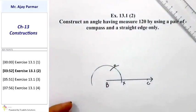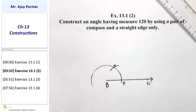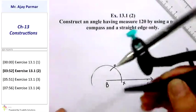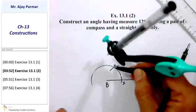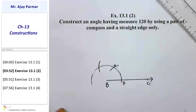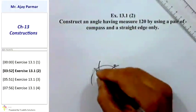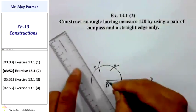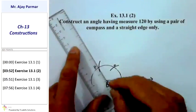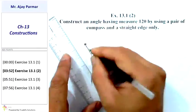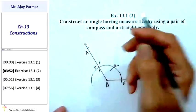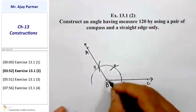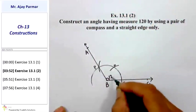We are not supposed to label this point when constructing angles in further figures, but here we will label it as point O. Taking O as the center with the same radius, I will draw another arc, and that arc will intersect the original arc at point P. We shall draw ray BA passing through point P, and the measurement of this angle will be 120°.